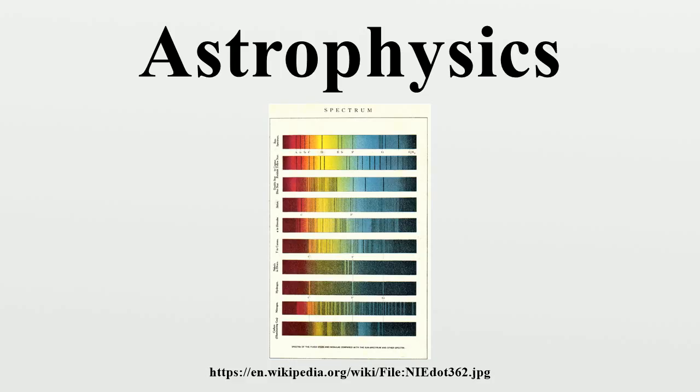By 1860 the physicist Gustav Kirchhoff and the chemist Robert Bunsen had demonstrated that the dark lines in the solar spectrum corresponded to bright lines in the spectra of known gases, specific lines corresponding to unique chemical elements.